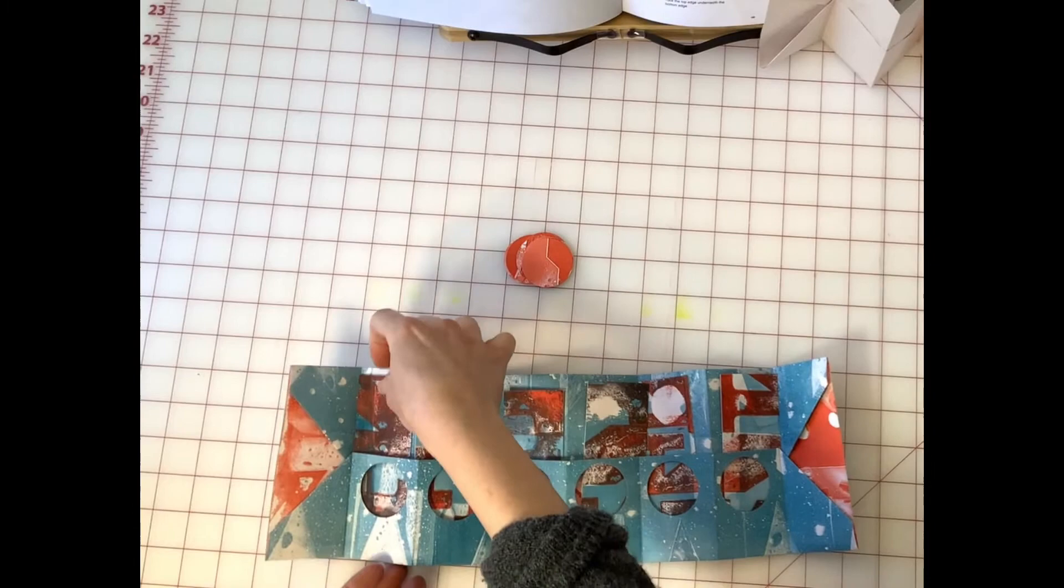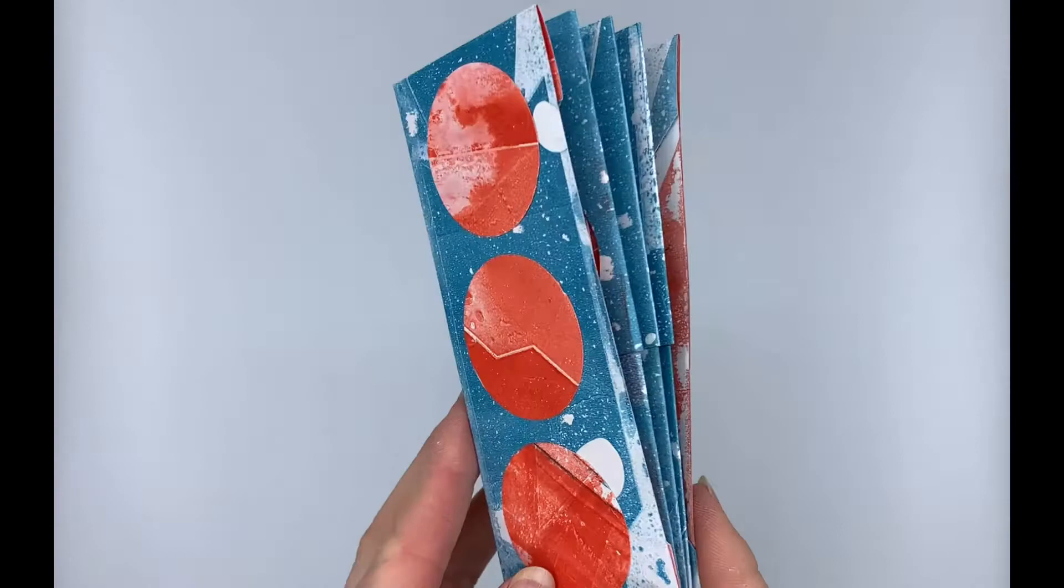The nice thing about punching the holes is I have these circles left over. And I'm going to use those to decorate the outside of the covers. So here are the circles on the outside. And here's the finished book.